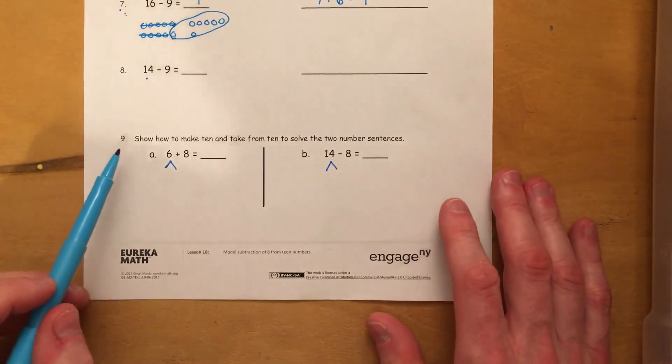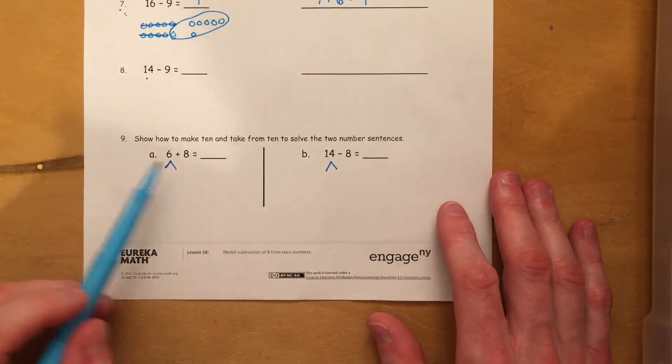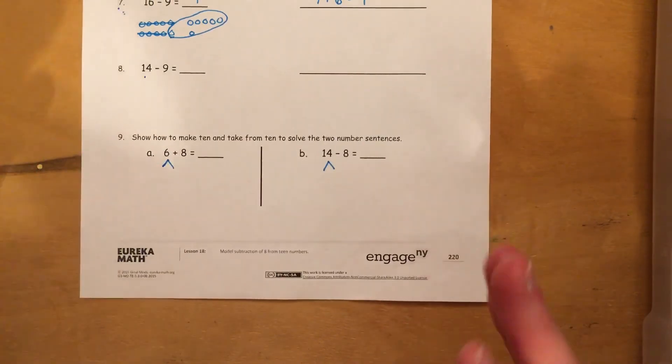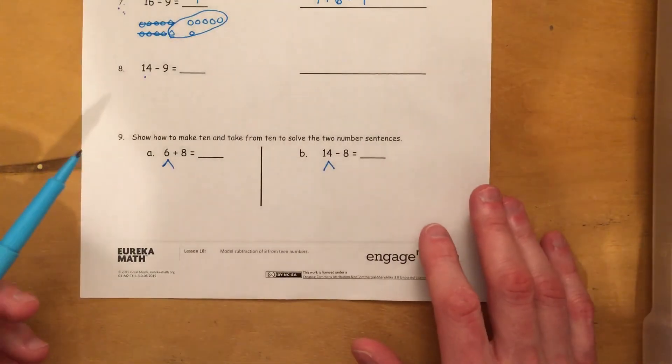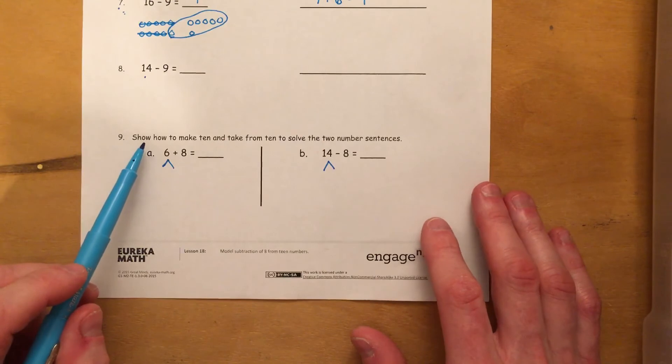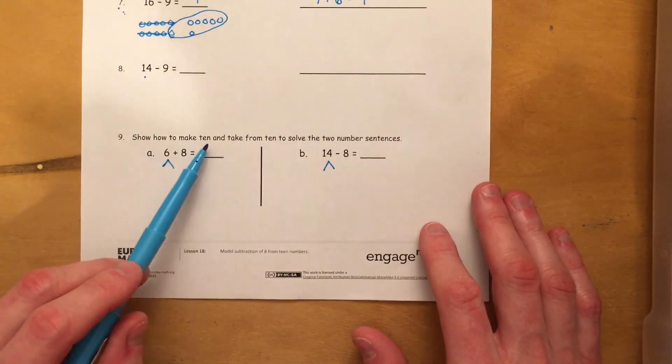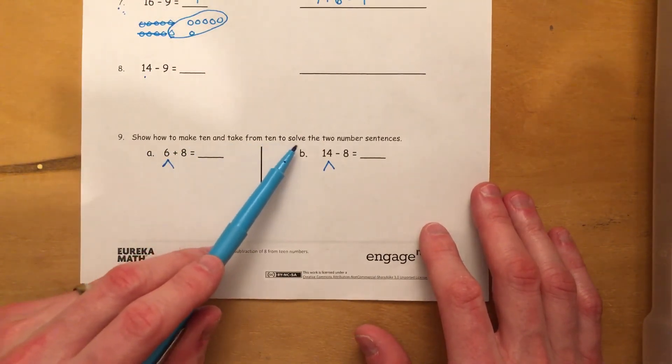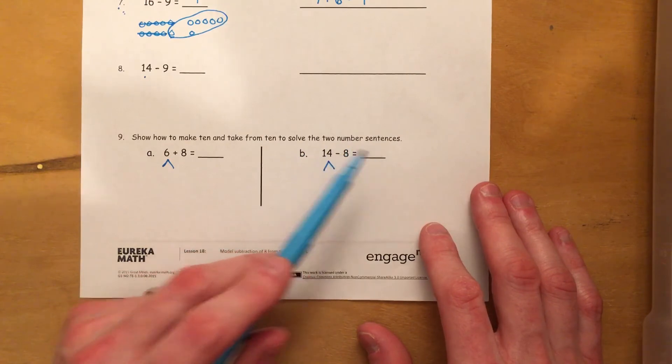All right. So number 9, part A and B, are kind of going to be a bonus if we get that far. So it says, show how to make 10 and take from 10 to solve the two number sentences.